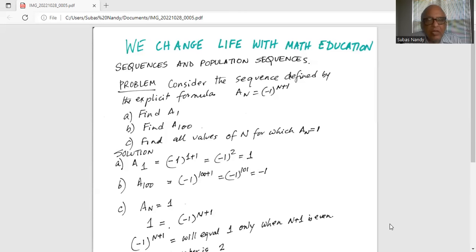What about A₁₀₀? It will be (-1) raised to the power of 100 plus 1. So (-1)^101. Since it is an odd exponent, 101 is an odd number, (-1) raised to an odd power will be equal to -1. So A₁₀₀ is equal to -1.